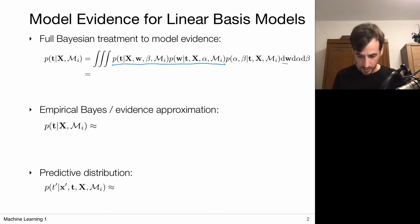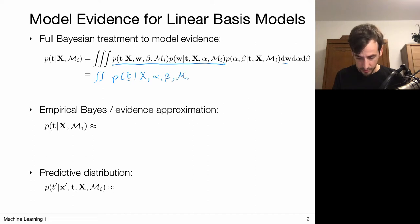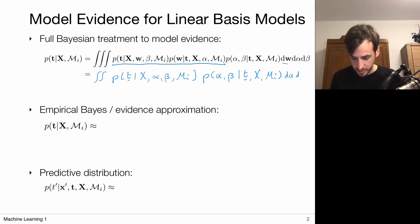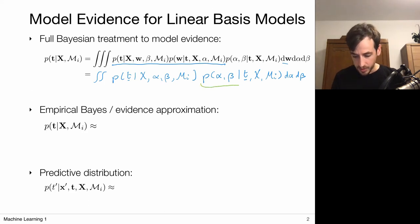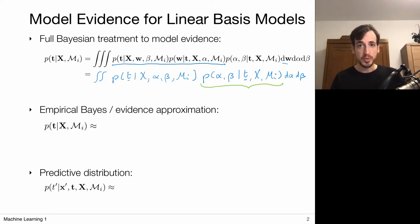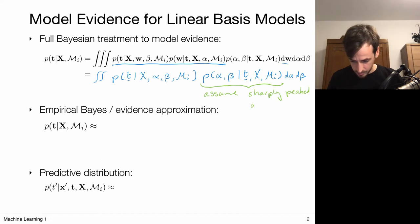Let's focus on what we currently have. We already have Bayesian predictive distributions in which W is marginalized out, but this still depends on my hyperparameters alpha and beta. The premise is that we also want to integrate these out with the posteriors for my hyperparameters. We're going to make the approximation that this posterior distribution is sharply peaked around some optimal values, alpha star and beta star.